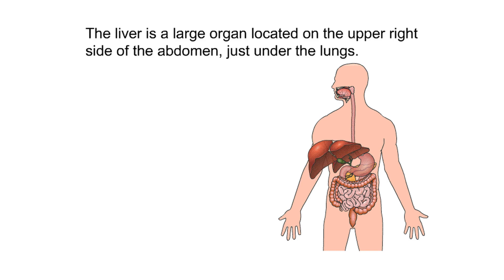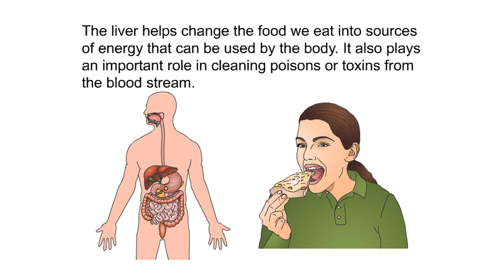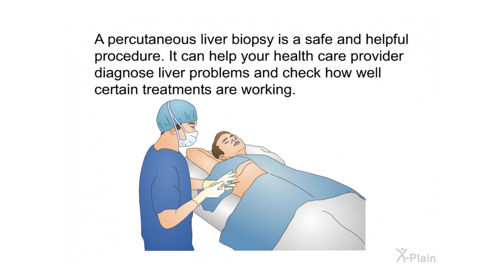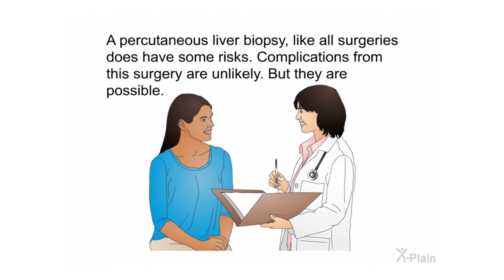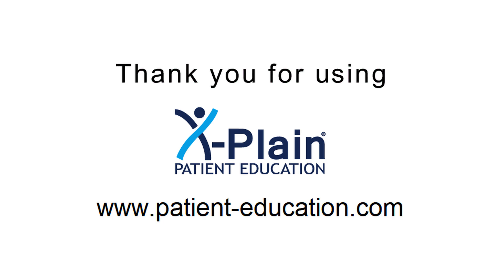Summary. The liver is a large organ located on the upper right side of the abdomen, just under the lungs. It helps change food into energy and plays an important role in cleaning toxins from the bloodstream. Diseases of the liver are common conditions that affect millions of people. A percutaneous liver biopsy is a safe and helpful procedure that can help your health care provider diagnose liver problems and check how well certain treatments are working. Like all surgeries, it does carry some risks, but complications are unlikely. Knowing about them may help you and your health care provider detect them early.